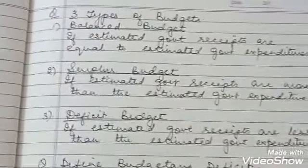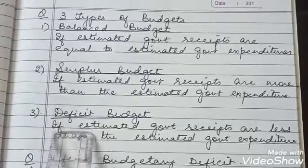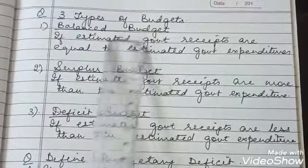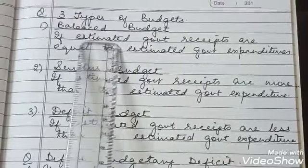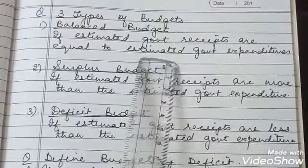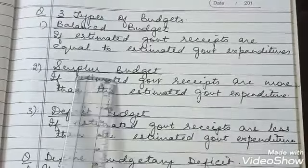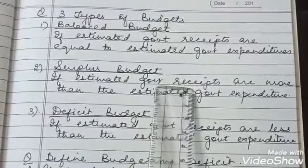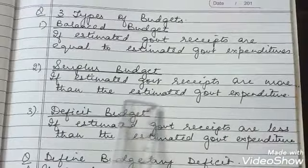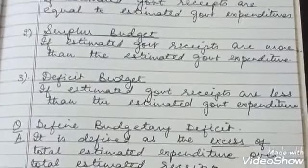There are three types of budgets we need to understand: the balanced budget, the surplus budget, and the deficit budget. In a balanced budget, estimated government receipts are equal to estimated government expenditure. A budgetary deficit occurs when total expenditure is greater than total revenue.